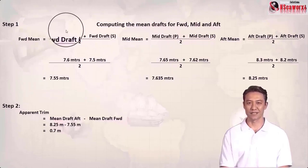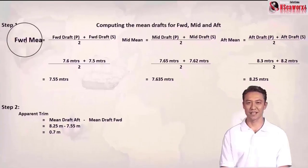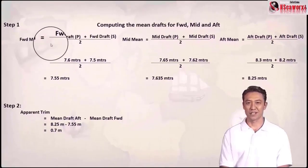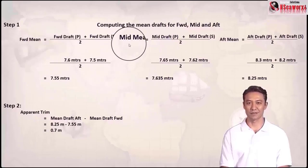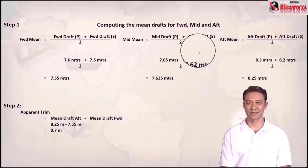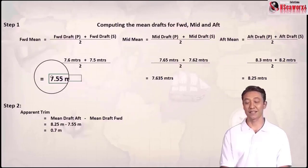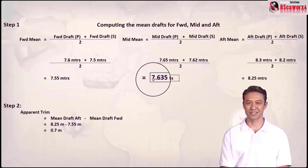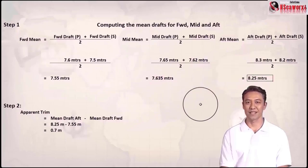Step 1: computing the mean drafts for forward, midship, and aft. The formula: forward mean equals forward draft port side plus forward draft starboard side, divided by 2. You do the same for mid mean and aft mean. The answers are: forward mean = 7.25 meters, mid mean = 7.635 meters, and aft mean = 8.25 meters.